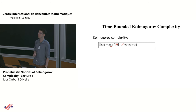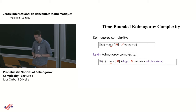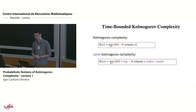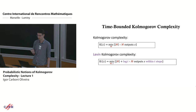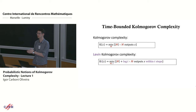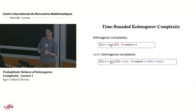Since Kolmogorov complexity is uncomputable, it's sometimes not helpful in applications in algorithms and complexity where we care about running time. So we can introduce time-bounded notions. One of the most influential definitions was suggested by Levin, where you define the complexity of string x by taking into account the running time. You minimize over description lengths and time bounds, weighting as: length of M plus log of the running time.